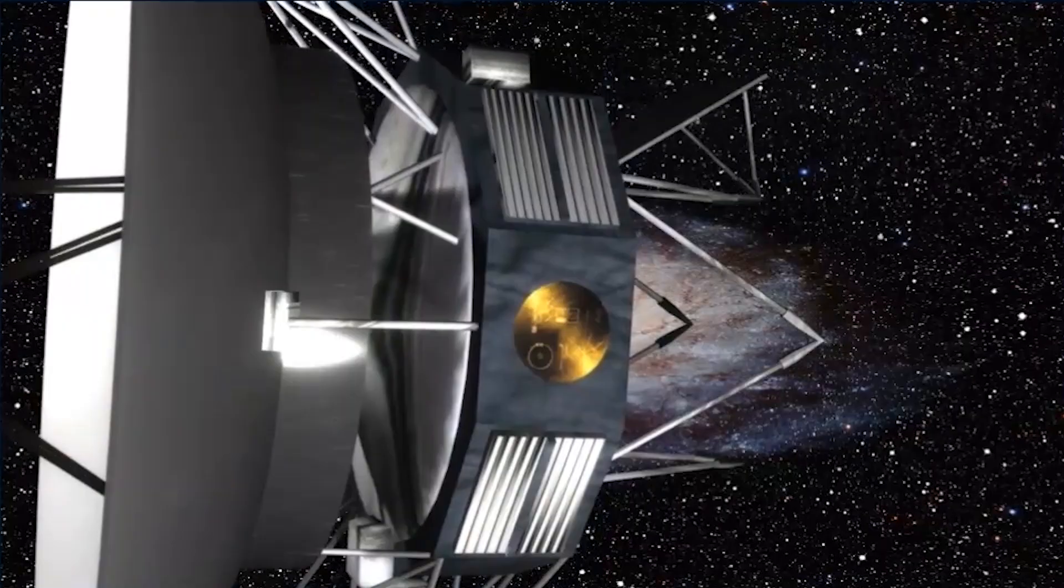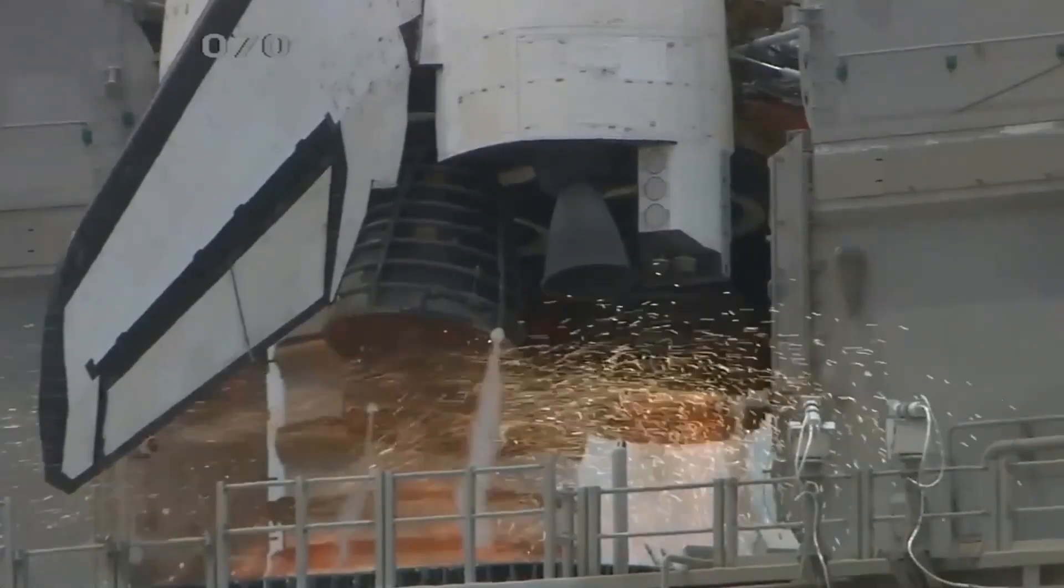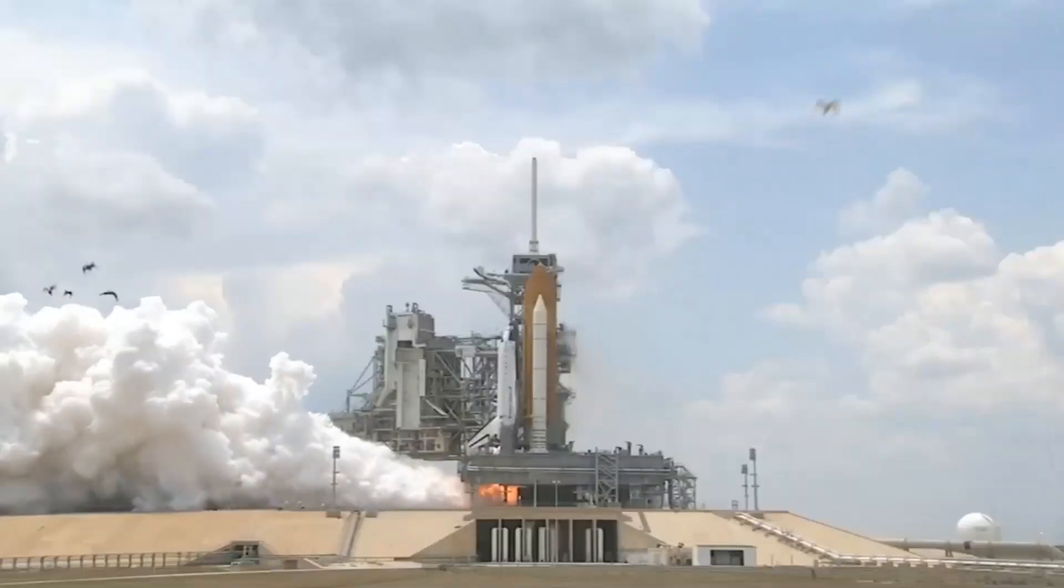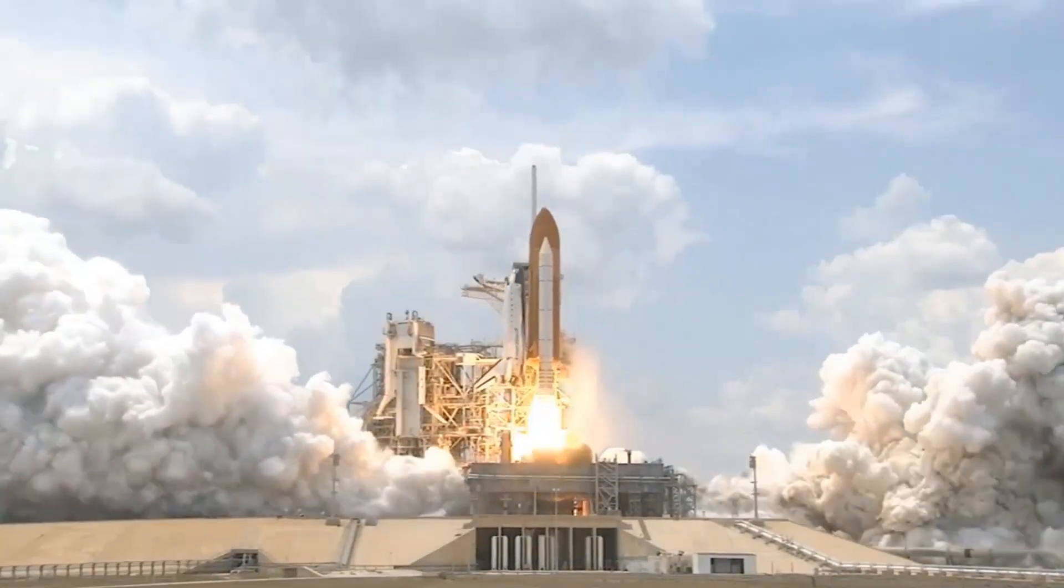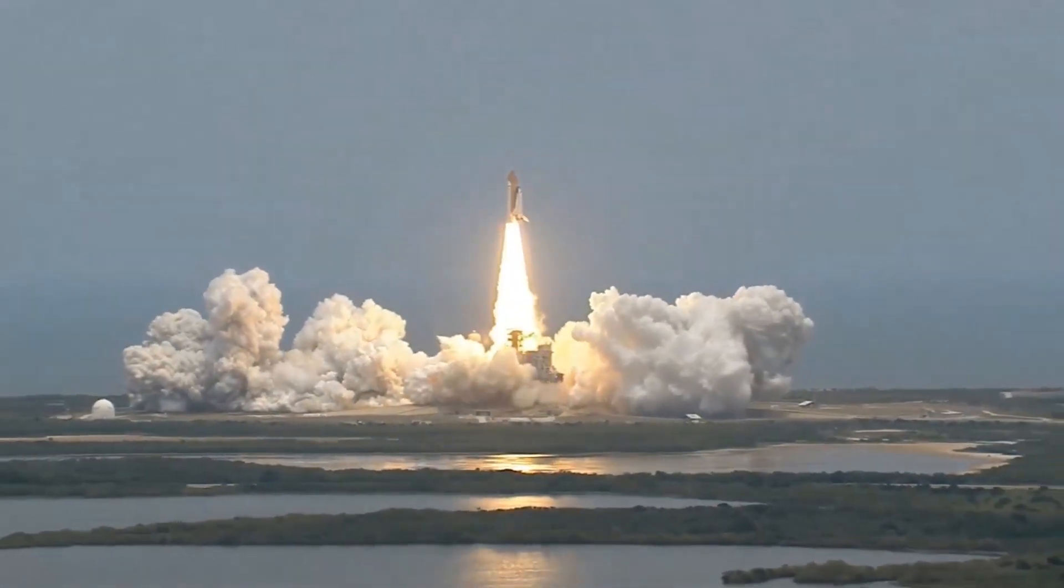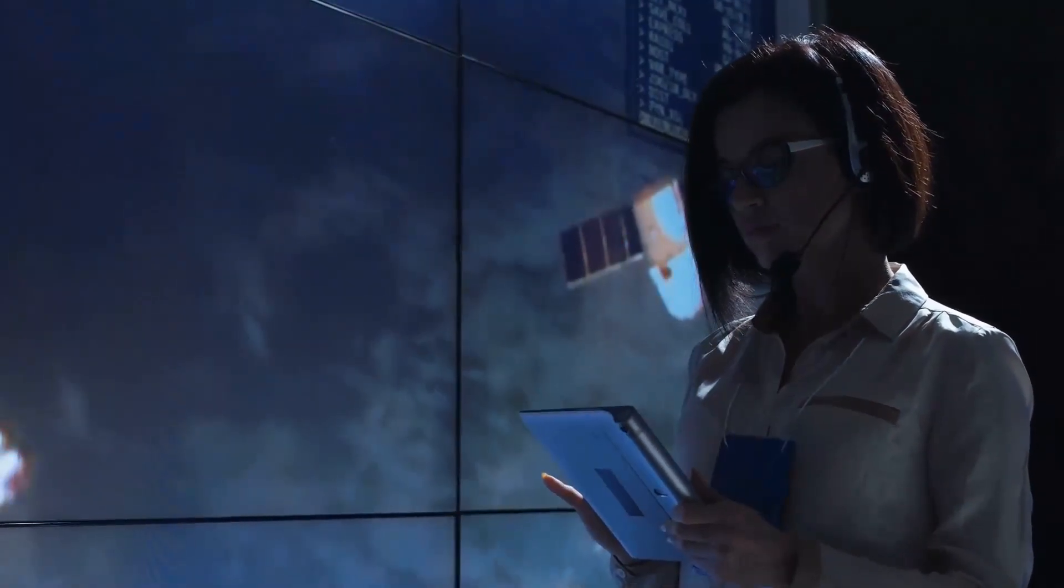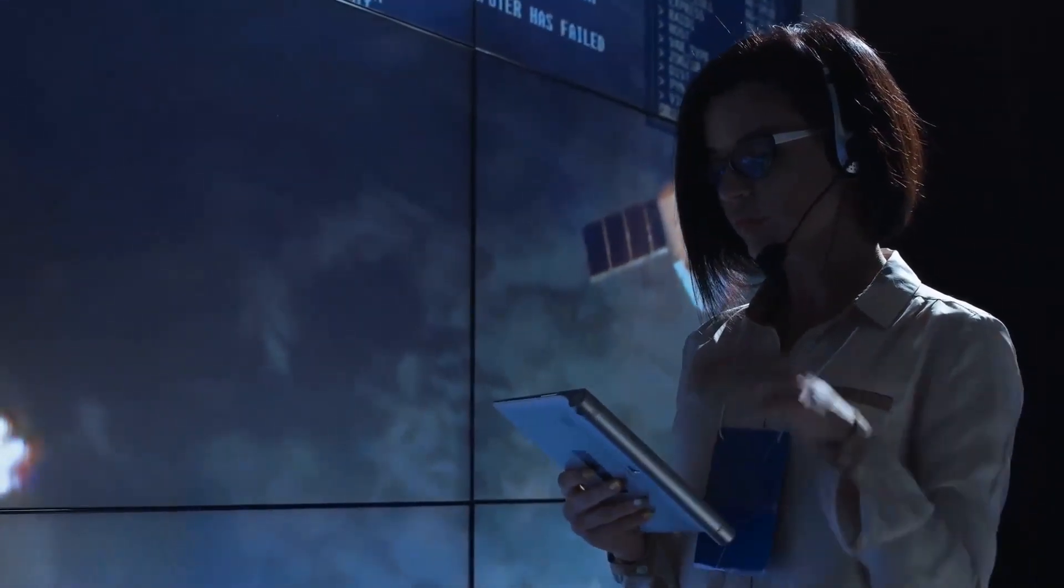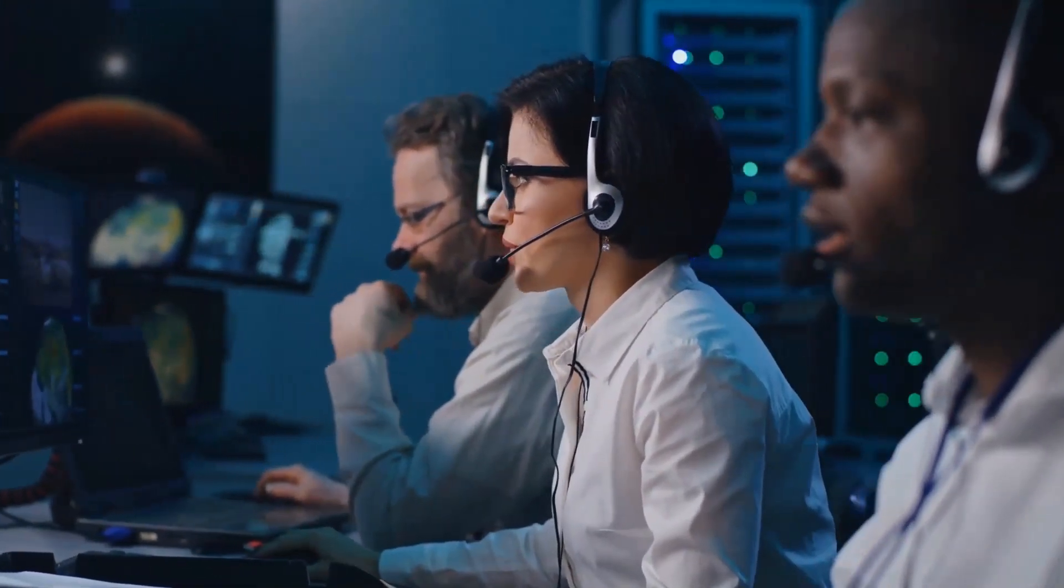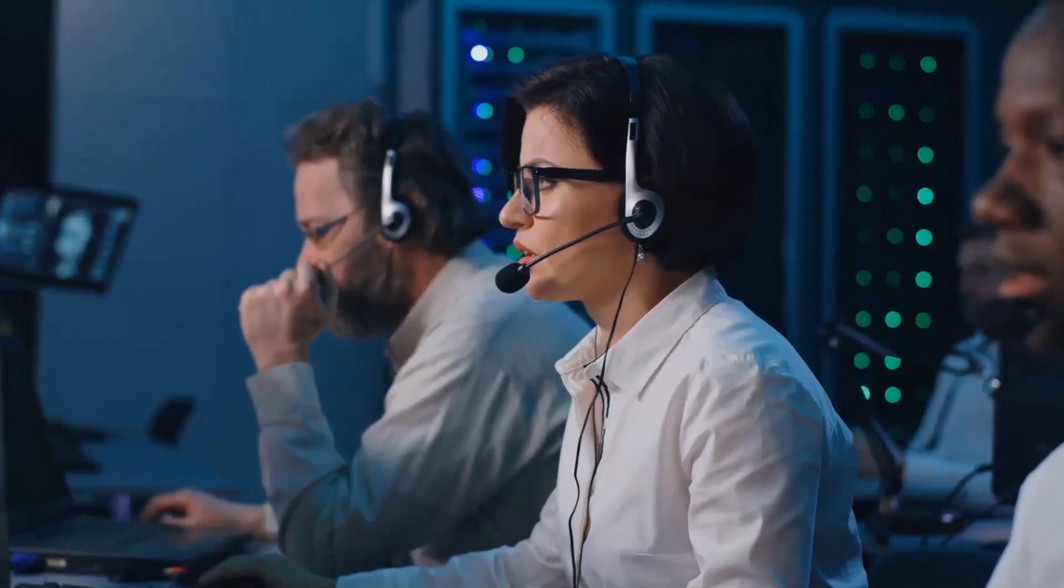Voyager 1's twin, Voyager 2, continues to operate normally. Launched in 1977, both Voyagers have operated far longer than mission planners expected and are the only spacecraft to collect data in interstellar space. Each spacecraft produces about four fewer watts of electrical power a year, limiting the number of systems the craft can run. The mission engineering team has switched off various subsystems and heaters to reserve power for science instruments and critical systems. No science instruments have been turned off yet because of the diminishing power, and the Voyager team is working to keep the two spacecraft operating and returning unique science beyond 2025.